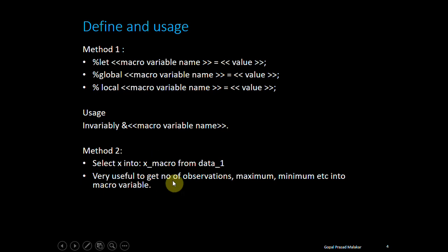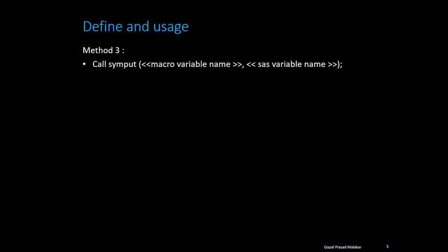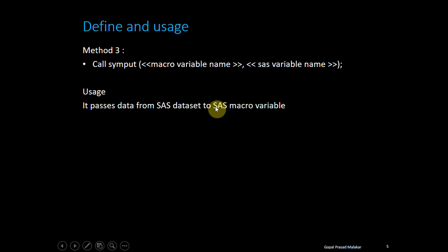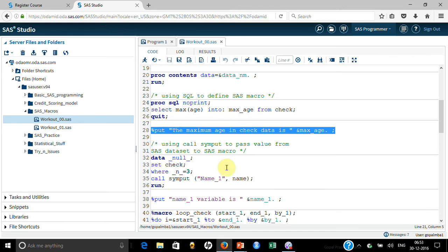Now let me show you the third method, which is also very useful. That method is called CALL SYMPUT. The syntax goes like this: you use CALL SYMPUT, put the macro variable name and the SAS variable name, and it takes data from the SAS variable and puts it inside the SAS macro variable. This is pretty handy because this way you can pass information from a general SAS dataset variable into a SAS macro variable.